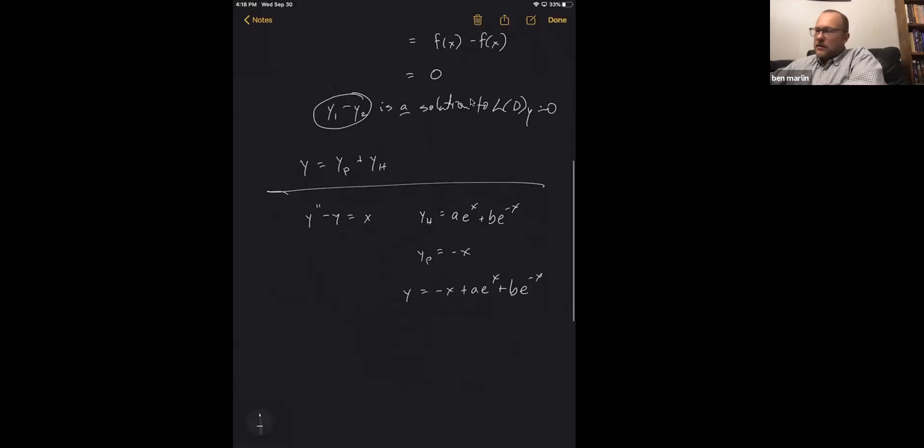If you're saying, oh gosh, I don't believe that. Well, let's calculate real quick. y prime is going to be minus 1 plus a e to the x minus b e to the minus x. And y double prime, then it's going to be just a e to the x plus b e to the minus x.